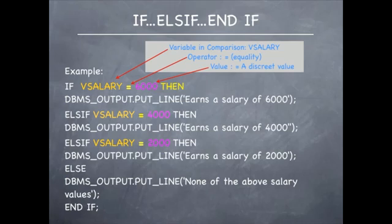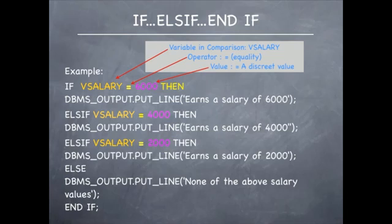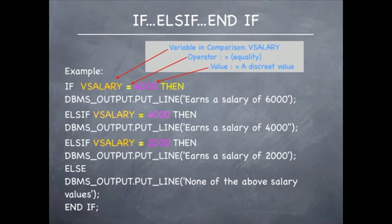I explained how to write the if-else-if statement in my previous tutorial. On this slide is an example of how the flowchart from the previous slide would be translated into an if-else-if construct. We perform multiple checks on the content of a variable called vsalary. It begins with a check to see if vsalary is equal to 6000. If it is true, the string to display is 'earns a salary of 6000'. After executing the action, the program will continue with the statement following the entire if construct.